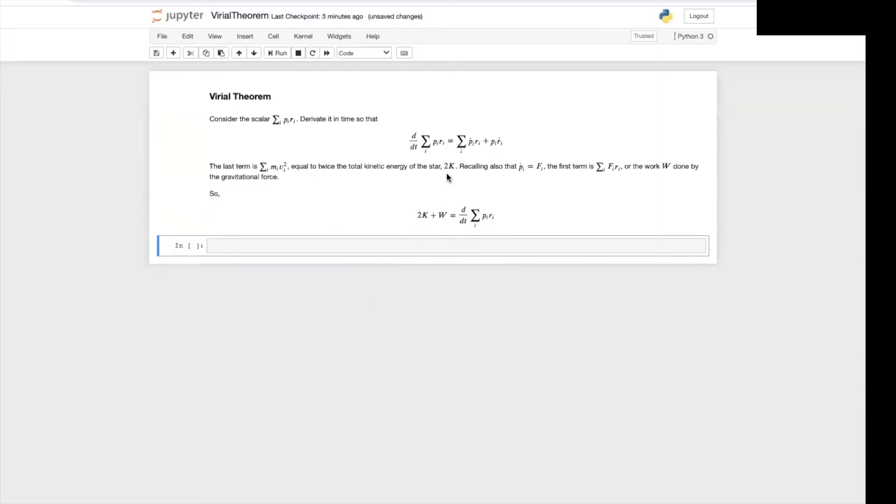This is the expression we have in the end then. Twice the kinetic energy plus the work done by the gravitational force is equal to the left hand side. We are rearranging here these terms. So we can evaluate this time derivative now on the right hand side.